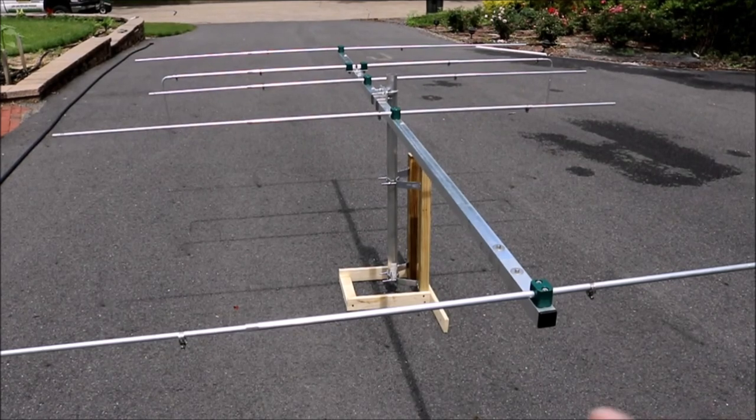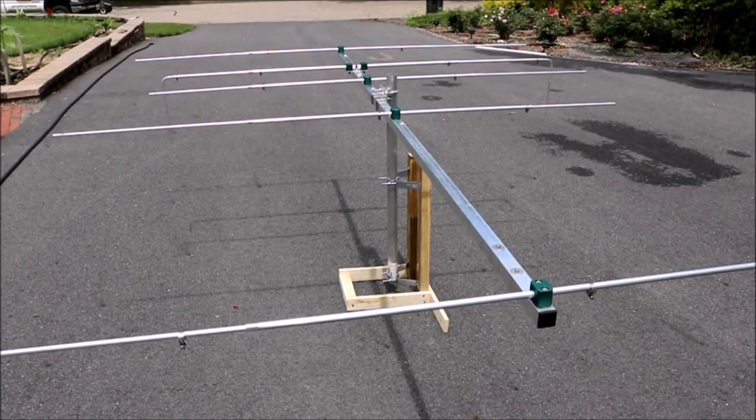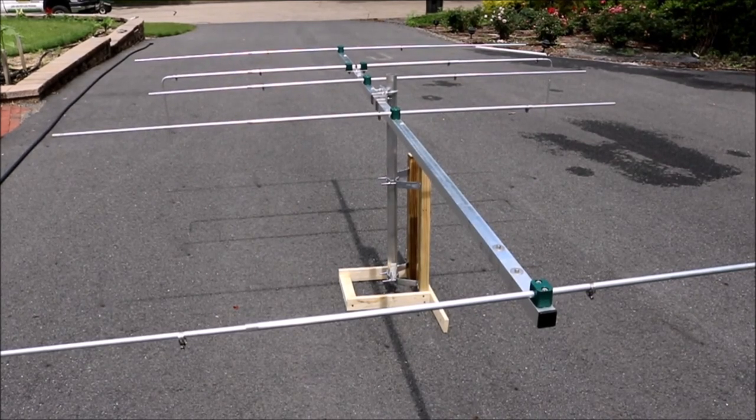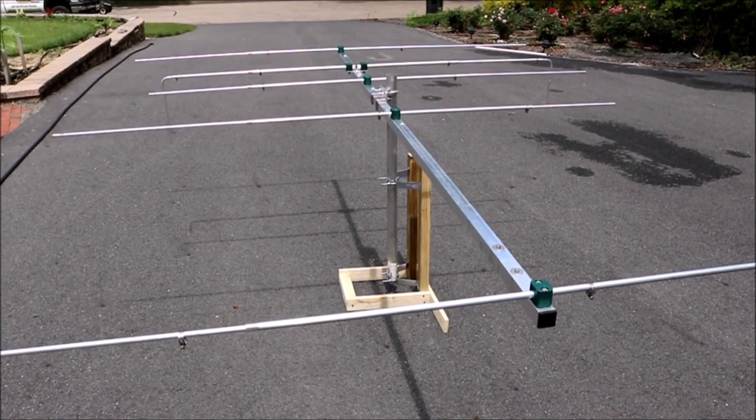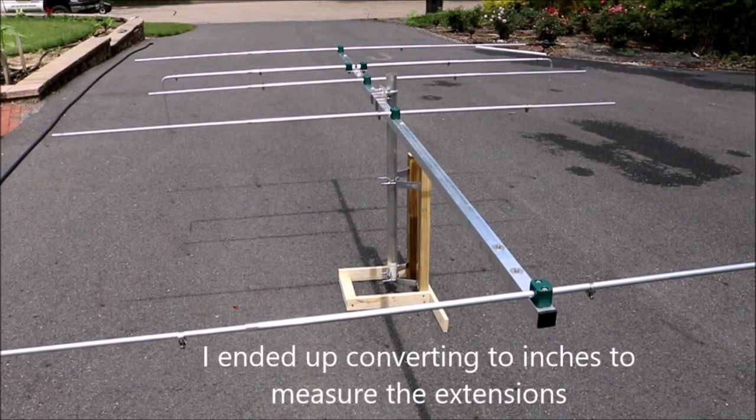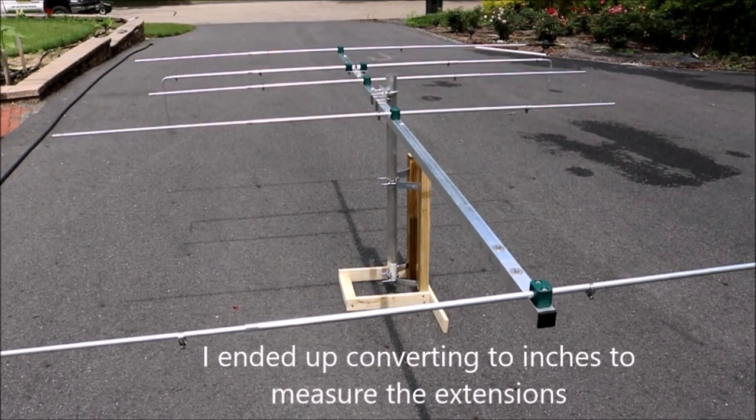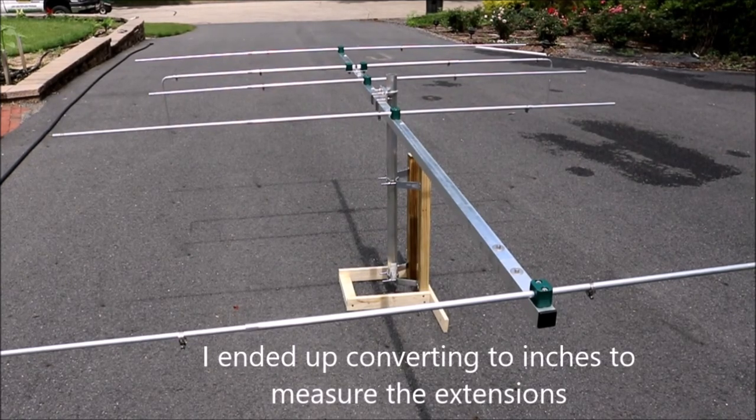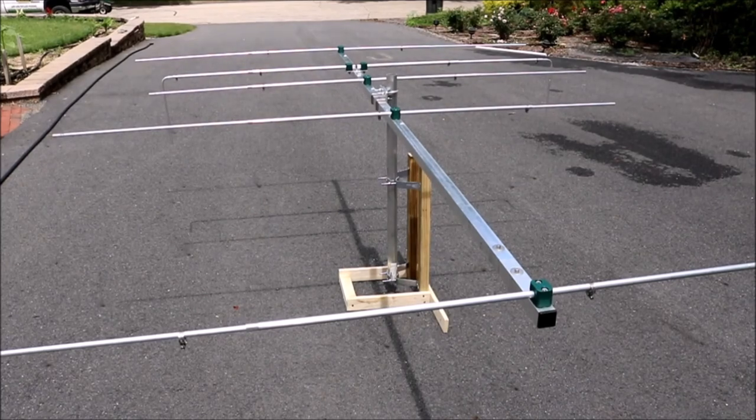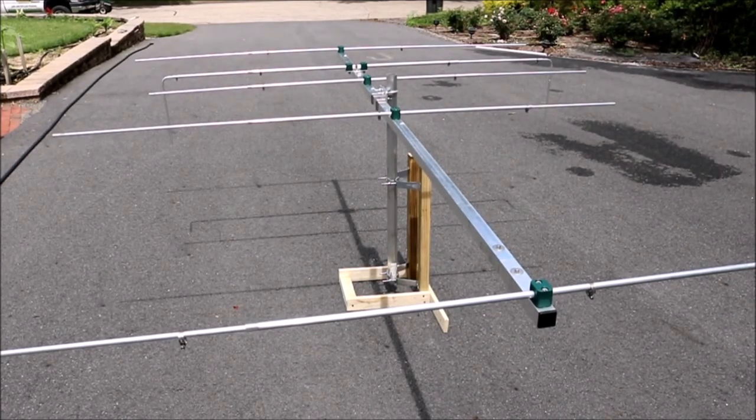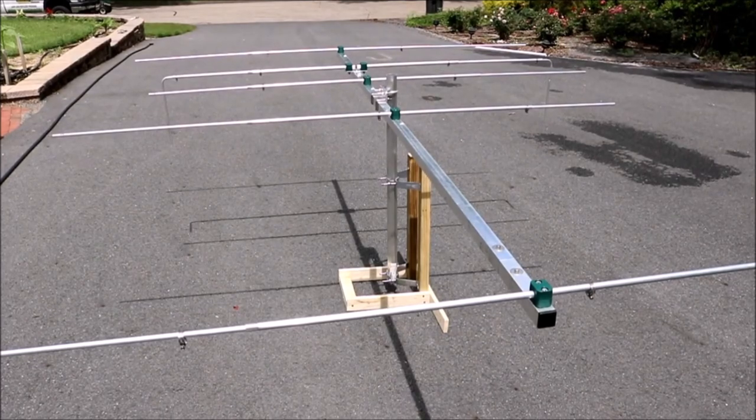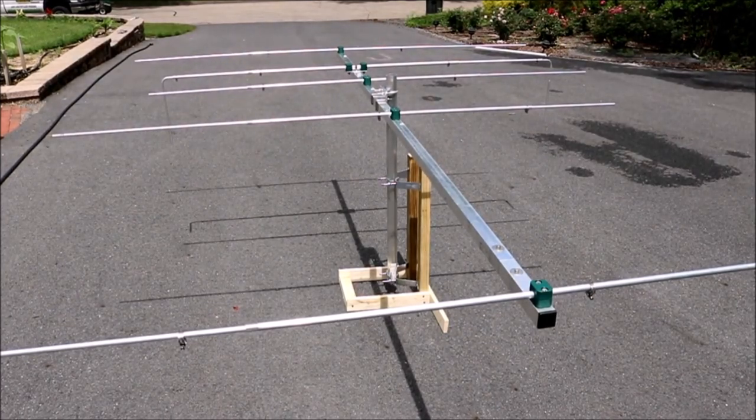Also when you measure, all the dimensions are in metric too. So you need, I have an 18-inch ruler. I don't think that's going to be long enough. I'm going to try it with the 18-inch ruler and see if I can get the length of the elements correct. And then what you do is this driven element, those tails there, you move those along with the 3/8-inch tubing back and forth until you minimize the SWR.